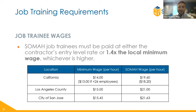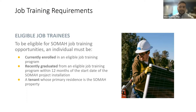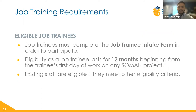Contractors must pay job trainees within 30 days of completing the work. To be eligible for SOMA job training opportunities, an individual must be currently enrolled in an eligible job training program, recently graduated from an eligible job training program within 12 months of the start date of the SOMA project, or be a tenant whose primary residence is the SOMA property. Eligibility as a job trainee lasts for at least 12 months beginning from the trainee's first day of work on any SOMA project, and a job trainee can work on multiple SOMA projects within those 12 months.